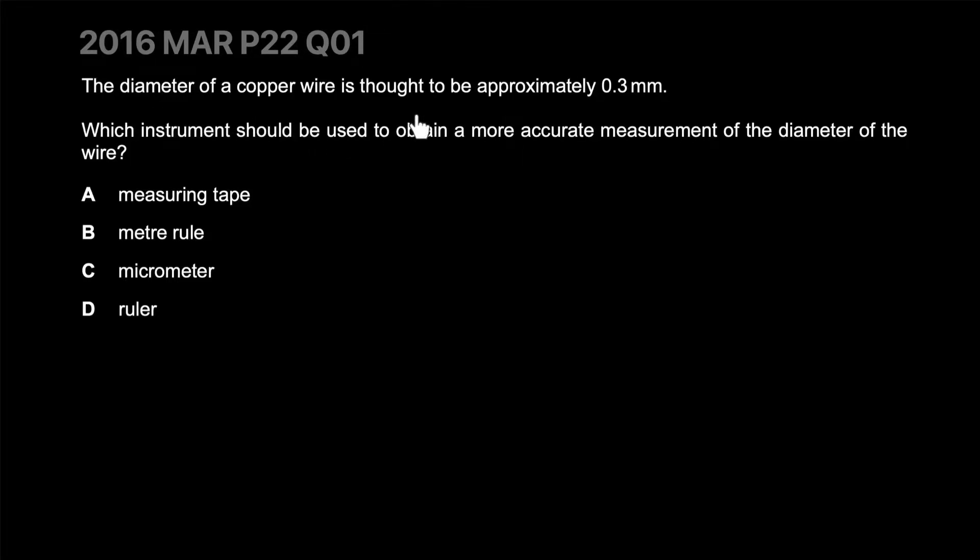The diameter of a copper wire is thought to be approximately 0.3 millimeters. Which instrument should be used to obtain a more accurate measurement of the diameter of the wire? When using a measuring tape, which is essentially an inch tape, if you're trying to measure the diameter of a wire which is roughly 0.3 millimeters - very thin wire.